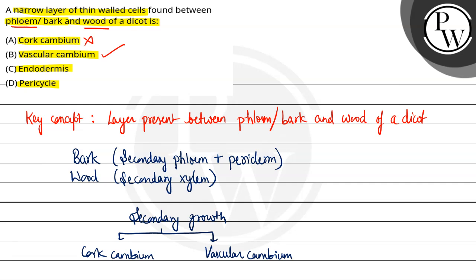Third one is endodermis — endodermis is present between primary cortex and pericycle, so that is incorrect. And pericycle is present between endodermis and primary phloem, so that is also incorrect. So the final answer is option B, vascular cambium. Hope you understood it well — best of luck.